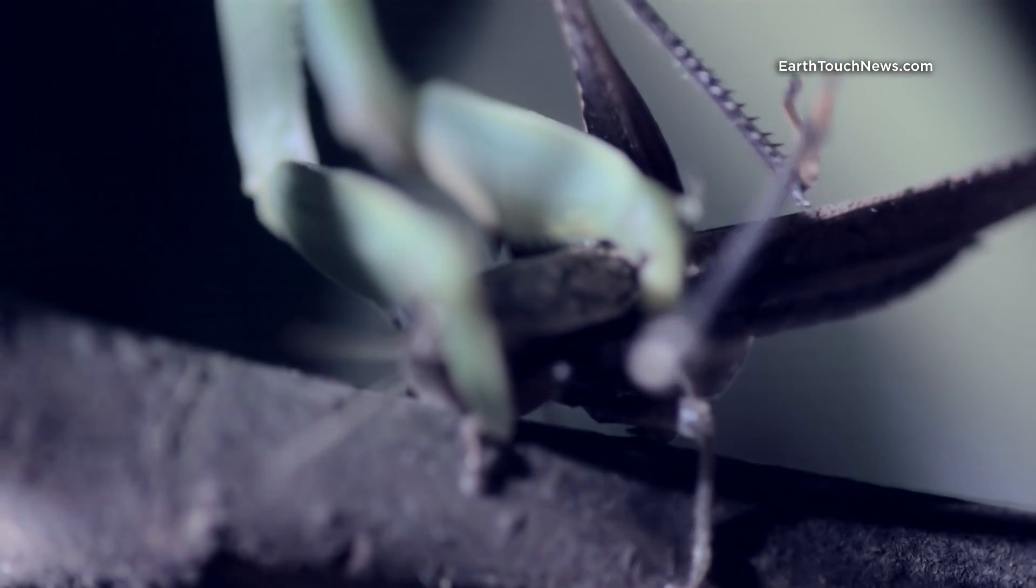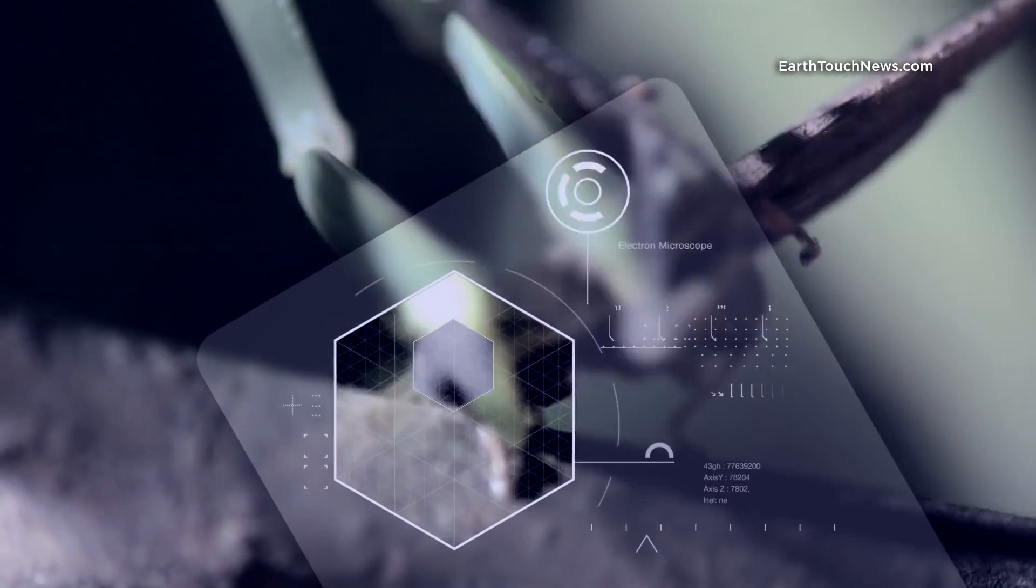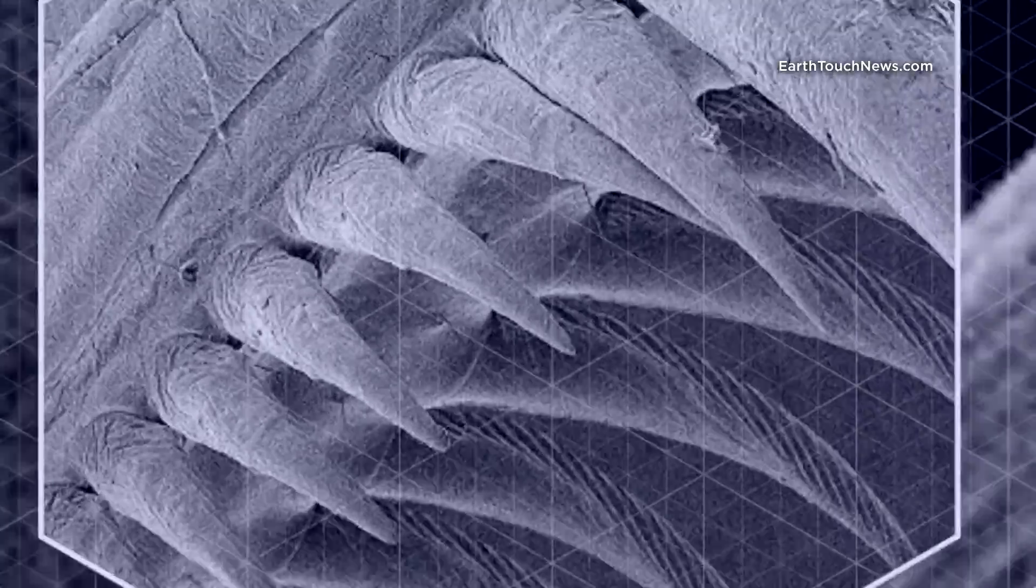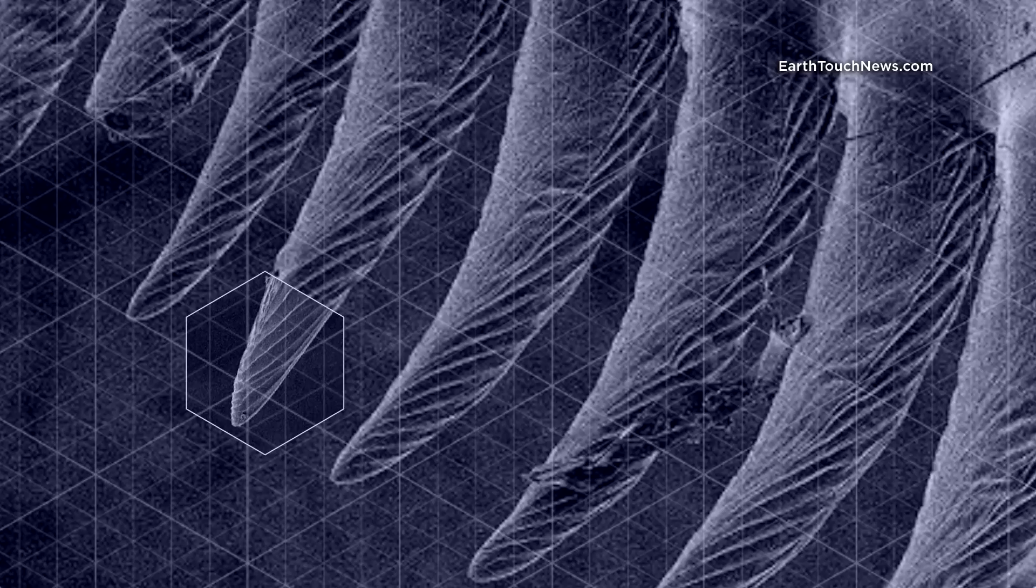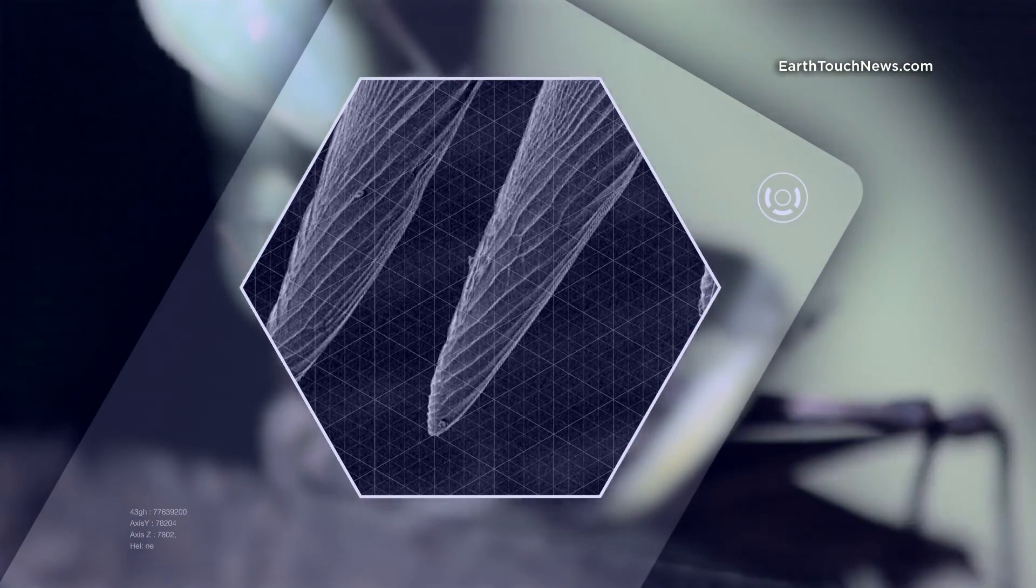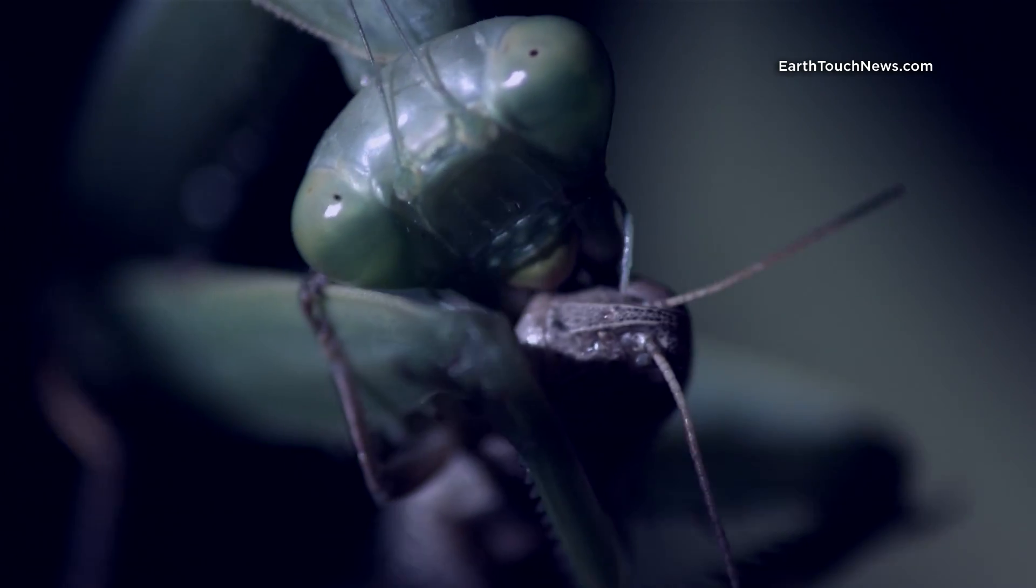In about 50 thousandths of a second, the mantis has it in a death grip. Sharp hooks and spine-like hairs on its leg keep the doomed creature in place as the mantis rips and tears it apart. It's eaten alive.